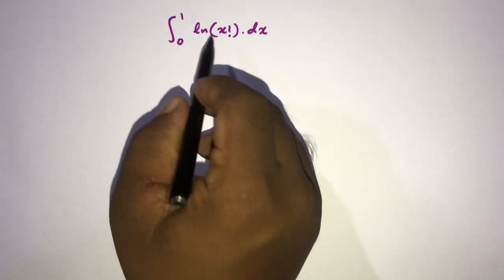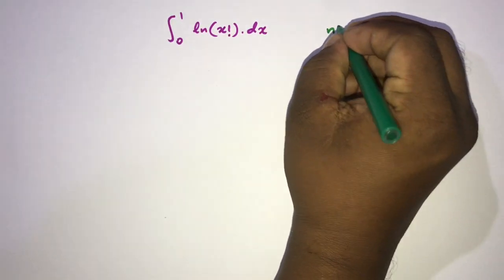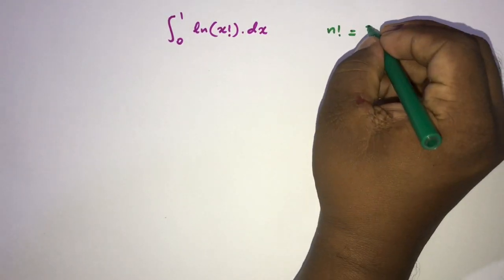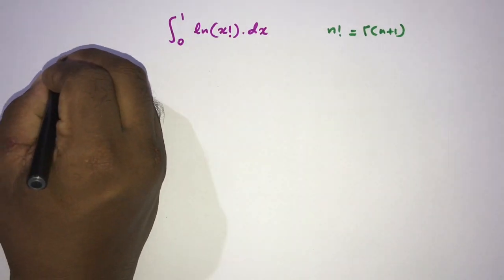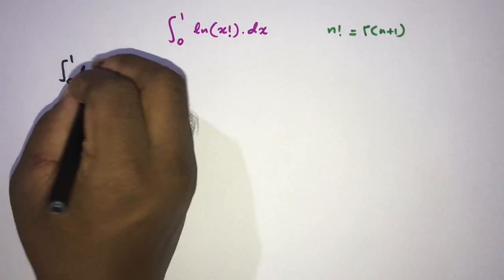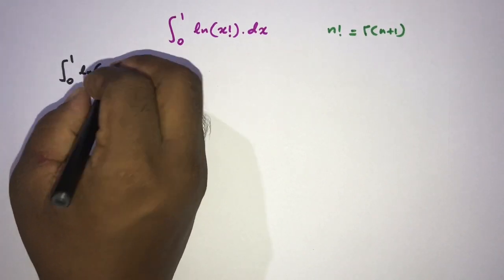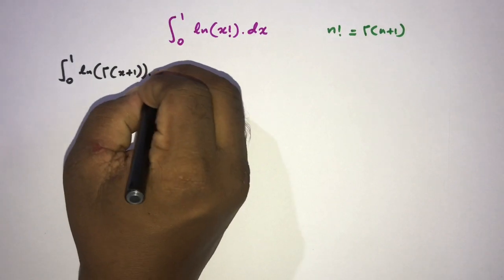First here we have x factorial. We know n factorial is equal to gamma of n plus 1. So we can write our integral as integral from 0 to 1, natural log of gamma of x plus 1 dx.